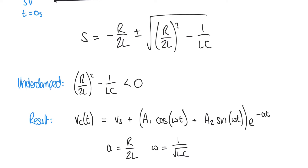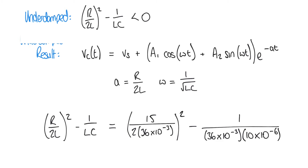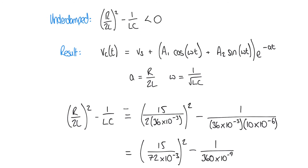Let's confirm this applies by calculating the discriminant with our new component values. The discriminant is (R over 2L) squared minus 1 over LC. Remembering the inductor is in millihenries (10 to the minus 3) and the capacitor in microfarads (10 to the minus 6), if we calculate that in a calculator we get minus 2,734,375. The exact value doesn't matter — what matters is that it's negative. This confirms we have the underdamped condition.